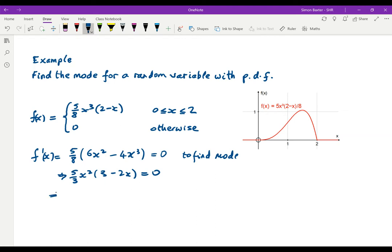If that's the case, then either x is 0, and from the graph we can see that's not the point we're looking for, or x equals 3/2. Therefore, 3/2 is the mode.